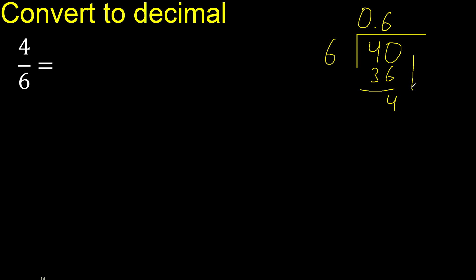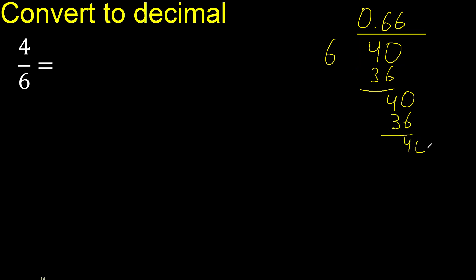Next, there is no more number, so we complete with 0. The point is here. So we have 0.40 again. 6 times 6 — subtract, and we're back to 4.